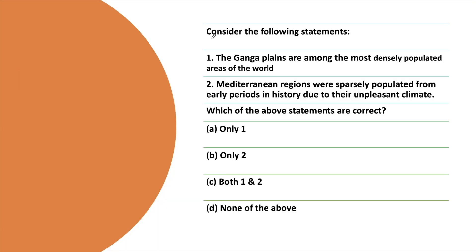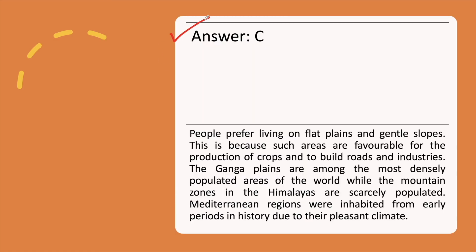The next question: Consider the following statements. Statement 1: The Ganga plains are among the most densely populated areas of the world. Statement 2: Mediterranean regions were sparsely populated from early periods in history due to their unpleasant climate. Which of the above statements are correct? Pause the video and answer. The correct answer is option C, with the explanation.